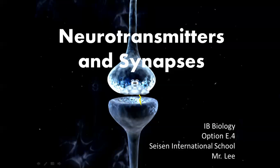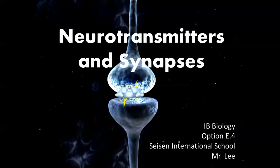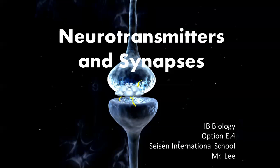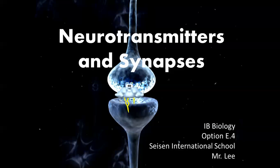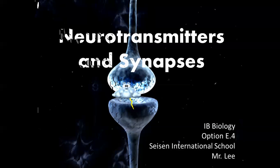We're going to be looking specifically at neurotransmitters and synapses, talking about how neurons actually fire, and then we're going to talk about some drug-related things. There are going to be a lot of good projects you could try on this — not by trying these drugs, but researching online and learning how these drugs work. I'm going to give you an overview of how everything works.